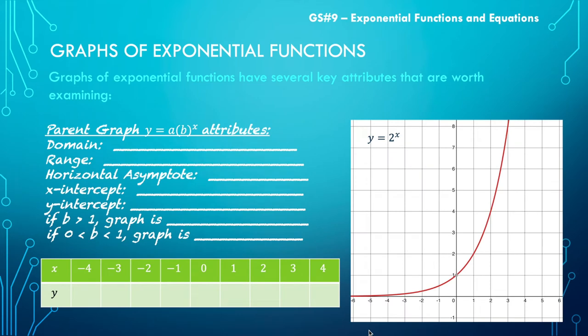To the right here we have the graph of the function y equals 2 to the x, and this is a nice parent exponential function to look at. It really could be any base value, it doesn't have to be 2, but 2 is a nice one to look at because we can actually see some of the coordinates and work with them fairly easily.